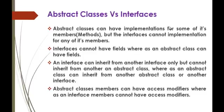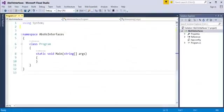Abstract Class can have implementation for some of its members, i.e. methods, but Interfaces cannot have implementation for any of its members. To understand this sentence very clearly, we will jump into Visual Studio and explore it.